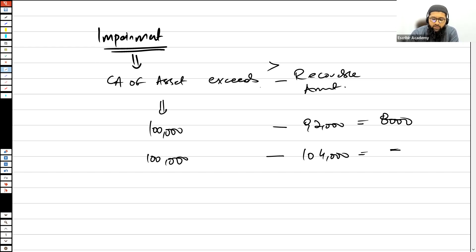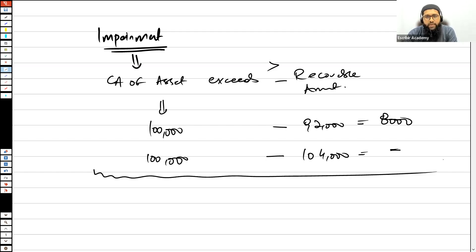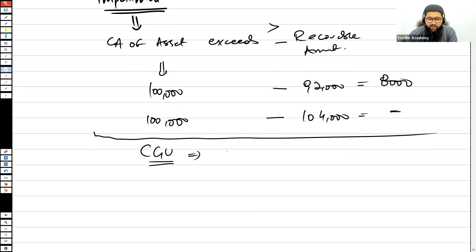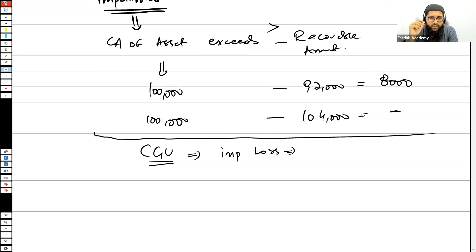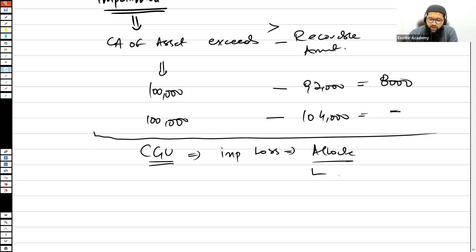Now, when we talk about a Cash Generating Unit (CGU) and the measurement of impairment loss for a CGU, as per IAS 36, if you have identified an impairment loss on a CGU, you need to allocate that loss in a specific manner: initially, you allocate the loss to the goodwill, and then to the remaining assets.